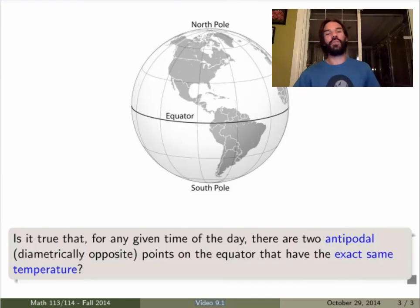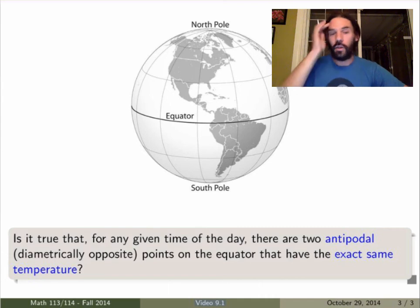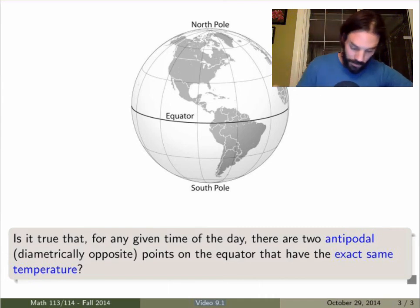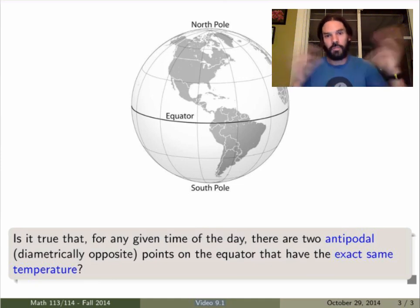Let me end this video with a really interesting question. So consider the Earth, our planet, and think of the equator, which is of course one of the great circles on the Earth. Now, let me ask you the following question. So of course you have a temperature distribution everywhere on the Earth. So everywhere on the Earth has a certain temperature, at a certain time of day.